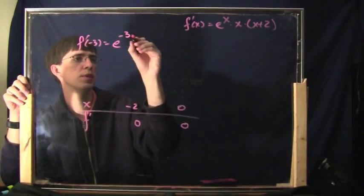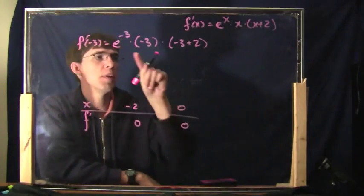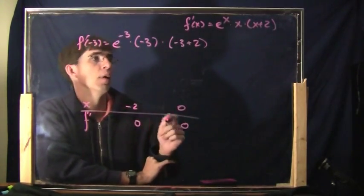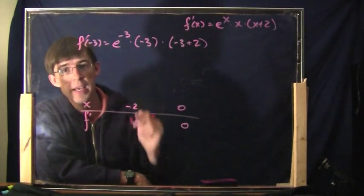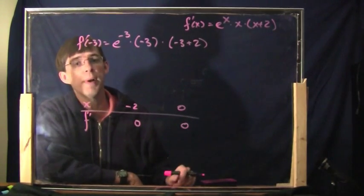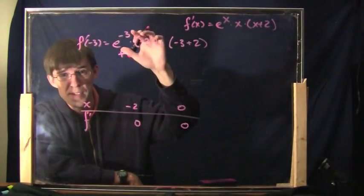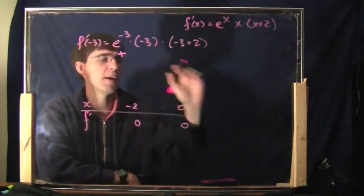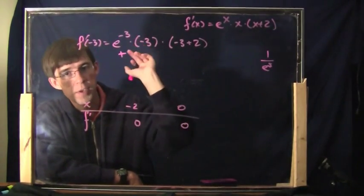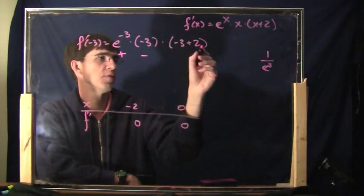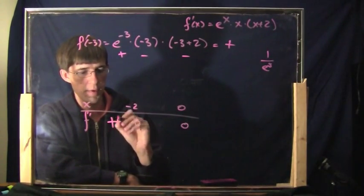e to the minus three: is that positive or negative? Remember — e to the x is always positive, never zero. Even though the exponent is negative, the thing is still positive. e to the minus three means one over e to the three, which is positive. So that factor is positive. Minus three is negative. And minus three plus two is minus one, also negative. So we have positive times negative times negative, which is positive. The derivative is positive in the region to the left of negative two.